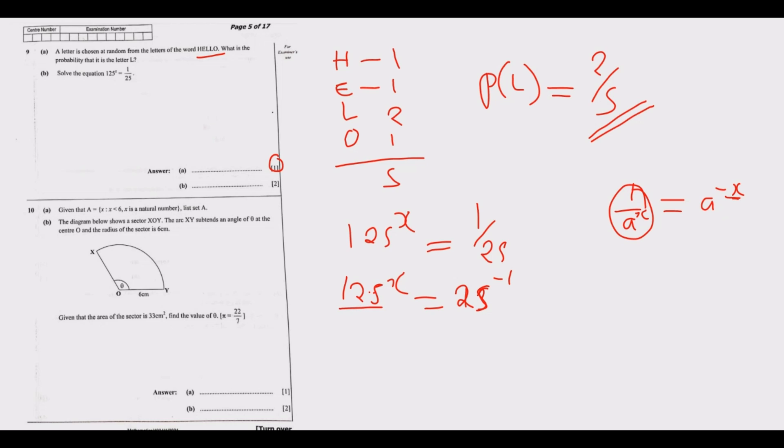So we can express this in common bases. What number do you multiply itself to get 25? You can multiply five - so five is a factor of 25. So you multiply five twice you get 25. We are going to have 5 to the power 3 to the power x. Then on the other side, how many times do we multiply five to get 125? We have 5 to the power 2 to the power negative 1.